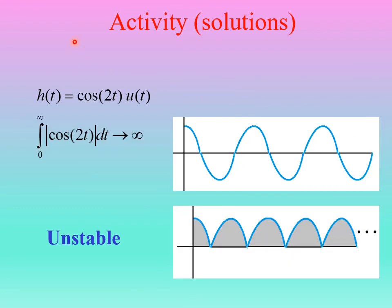Example five: h(t) = cos(2t) · u(t). You might argue the positive and negative areas of the cosine cancel to zero, making it stable. But remember, we must take the absolute value of the function. The absolute value of cosine is always non-negative, and since it keeps going and going to the right, the integral of the absolute value approaches infinity. So this also represents an unstable system.